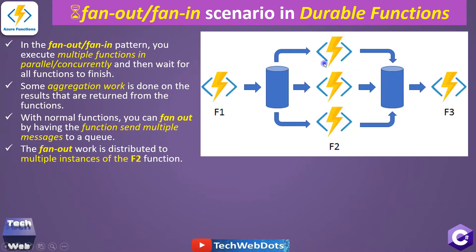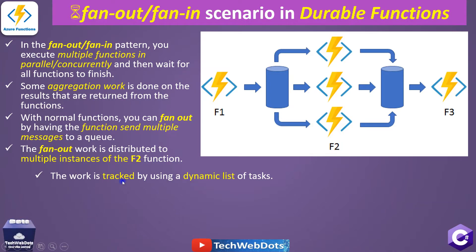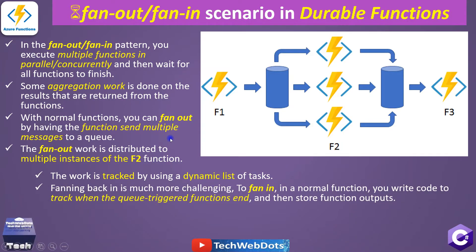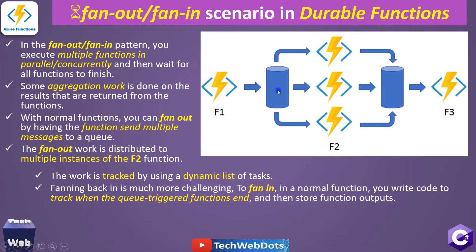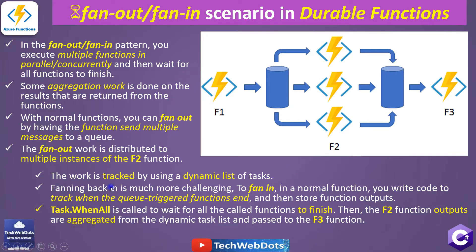The fanout works by distributing work to multiple instances of the f2 function, tracked by a dynamic list of tasks. Fan-in, which is much more challenging, means integrating all the outputs of the f2 function instances. In a normal function, you would write code to track when the queue-triggered functions finish and store their output — essentially a queue calling multiple instances of f2, similar to a for-each loop.